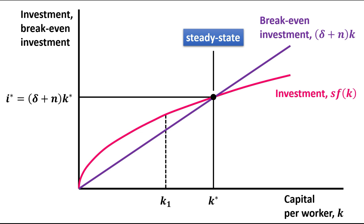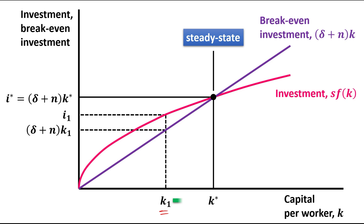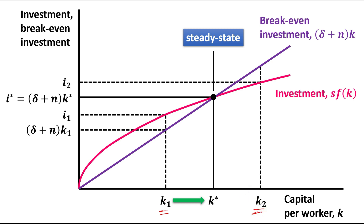For any capital stock less than the steady state level K star — let's say K1 — the investment level is greater than the breakeven investment, so K rises toward K star.